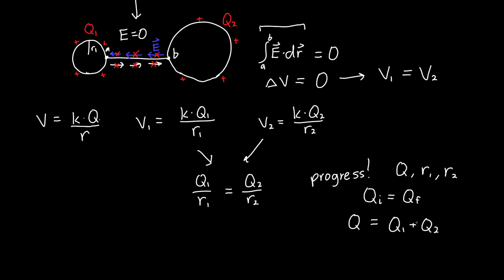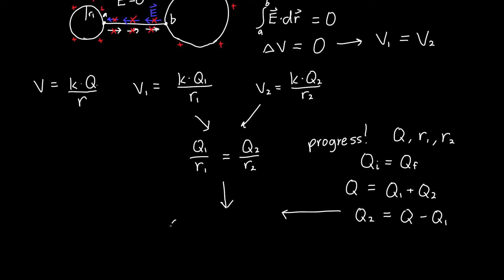We can rearrange this equation to eliminate one of our variables. We could say Q2 is equal to Q minus Q1. If we plug that into this equation, then we'll get that Q1 is just equal to Q times R1 over R1 plus R2.